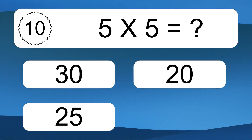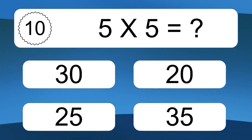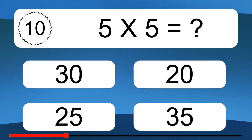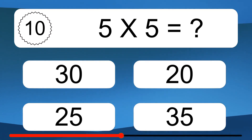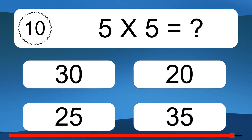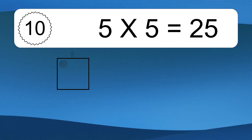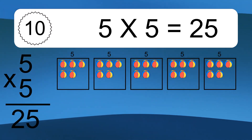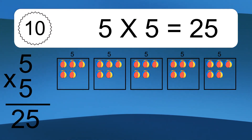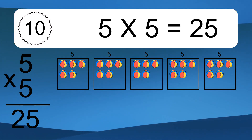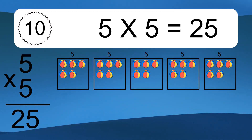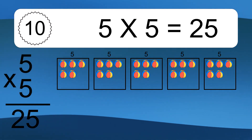5 times 5 equals what? 5 times 5 equals 25. We have 5 boxes, and each box has 5 colorful balls inside. If you count all the balls in all the boxes together, you will have 5 times 5 balls. This equals 25 balls.